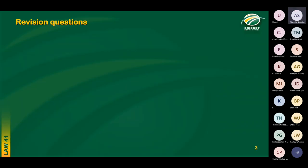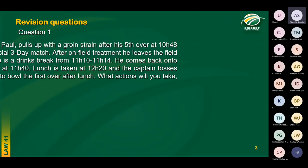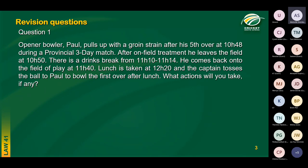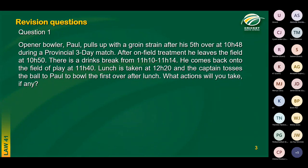The first revision question from Monday evening: the opening bowler Paul pulls up with a groin injury at 10:48 in a provincial game. He only leaves the field at 10:50. There's a scheduled drinks break from 11:10 till 11:14. Paul then comes back onto the field at 11:40. Lunch is taken at 12:20, and after lunch the captain tosses the ball to Paul to bowl the first over after lunch. What actions will you take, if any? When working out penalty time, the best method is to break it up and work out the penalty time every time there is a break in play, whether it's an interval or a rain interruption.